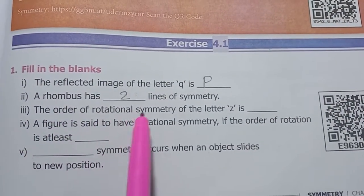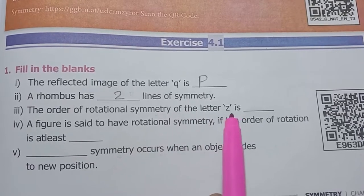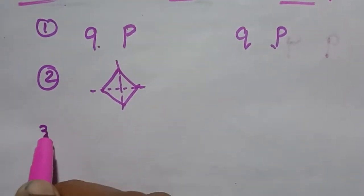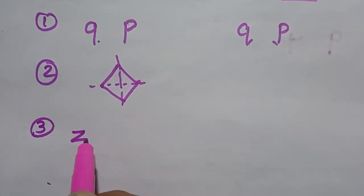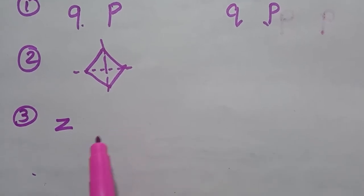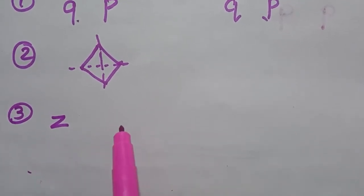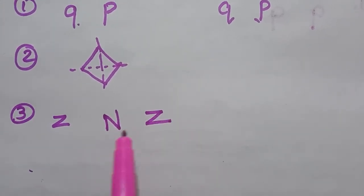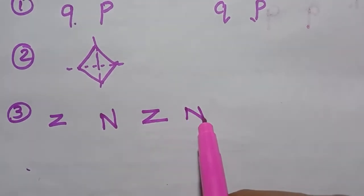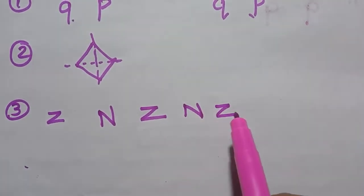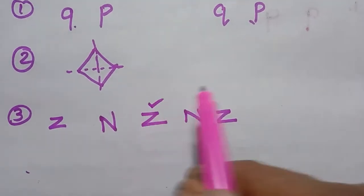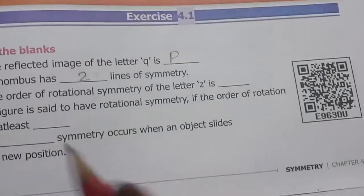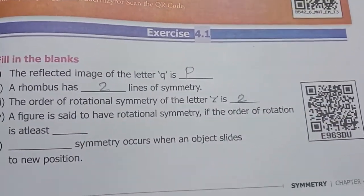Third one: the order of rotational symmetry of the letter Z is... Rotating Z at 90 degrees, 180 degrees, 270 degrees, and back to 360 degrees — the original position. It matches at 180 and 360, so two times. The answer is 2.